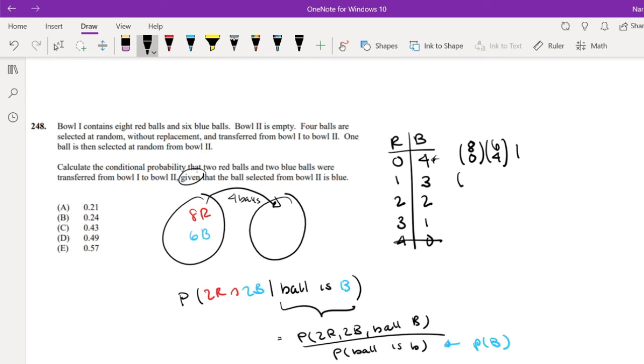And similarly I can do this one. Out of 8 balls, I pick 1. And out of 6 blue balls, I pick 3. And what's the probability that it's blue? Well, 1 is red and out of 4 is blue. So the probability of blue is 3 fourths.